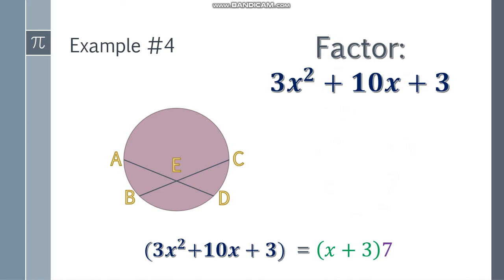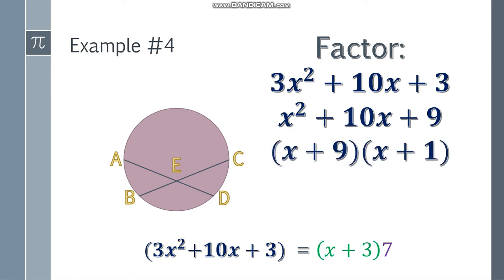Now I'll be using the slide technique. So how does the slide technique go? This 3 here, the coefficient, you multiply it to the constant at the end. So that will be X² + 10X + 9 since 3 times 3 is equal to 9. Now we factor that one and we have X + 9 and X + 1.